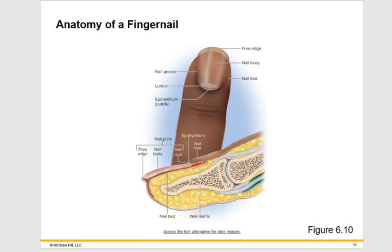Looking at a picture, here's your nail root underneath the skin with the cuticle hanging over. The nail body is the major part of the nail, and then you have the free edge. The nail body, nail root, and free edge all make up the nail plate. The nail bed is the skin underneath, and only the nail matrix portion is where you're going to see growth of the nail.